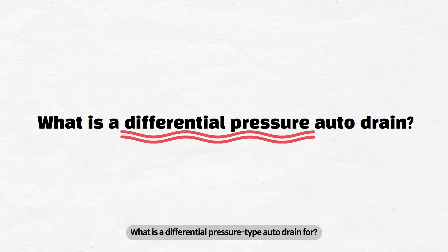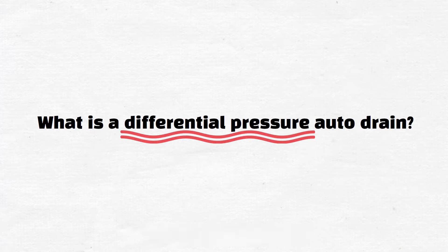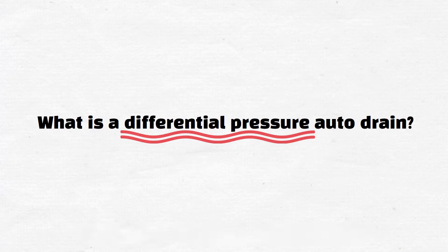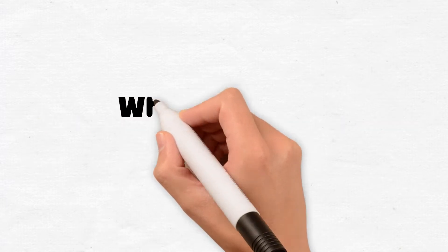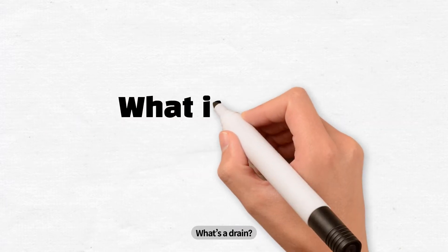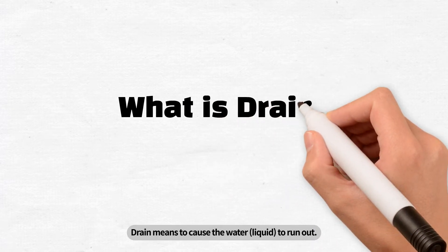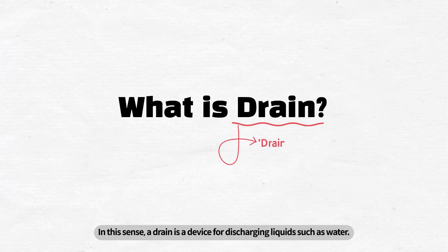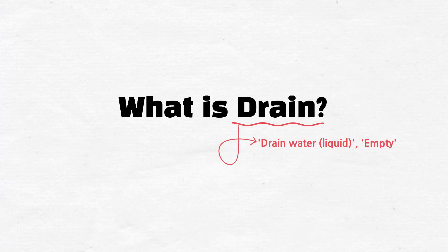What is a differential pressure type auto drain for? Let's begin with the definition of a drain. What's a drain? Drain means to cause the water or liquid to run out. In this sense, a drain is a device for discharging liquids such as water.